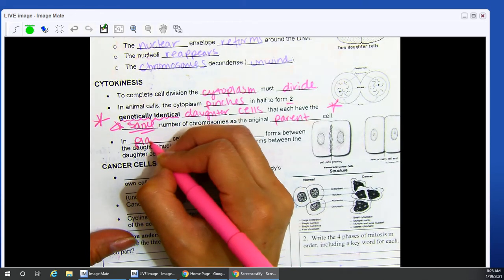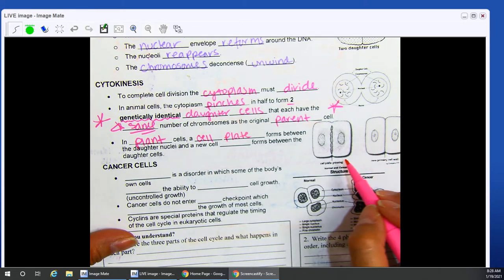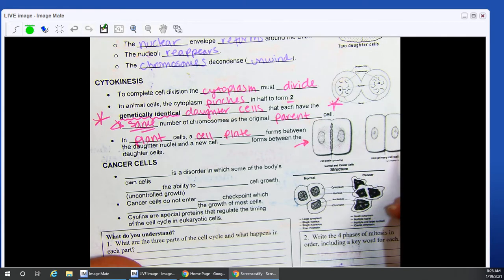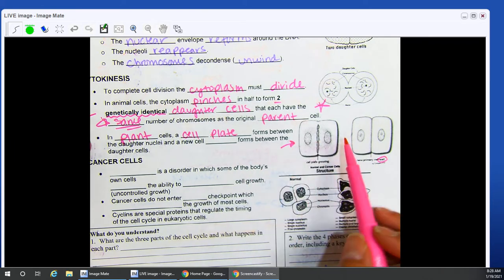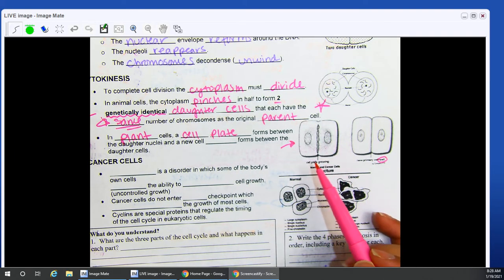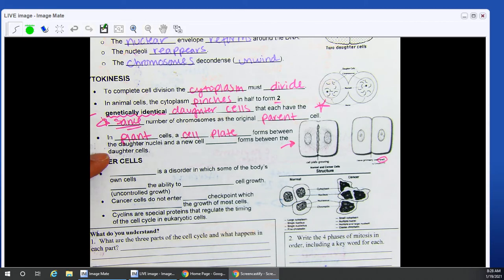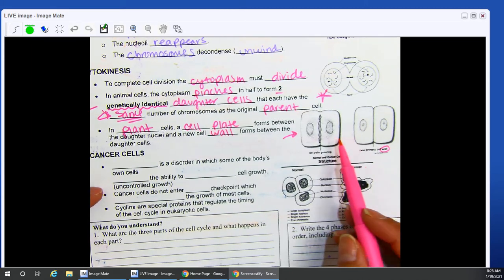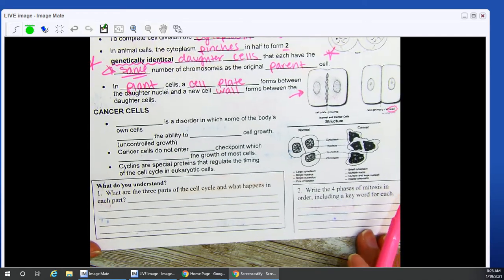In plant cells, a cell plate will form. So right here, this is a diagram of a plant cell. How do I know? Because I can see the cell wall. I'm going to go ahead and circle this right here. Cell wall. We have this characteristic square shape of a plant cell. So we will see a plate begin to form. This is how it divides into a new cell. So it's going to form in between your daughter nuclei. New cell wall forms. So this is how it looks in a plant cell. So that would complete your cell division.